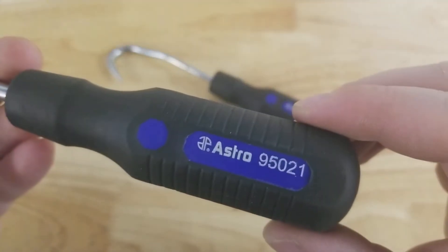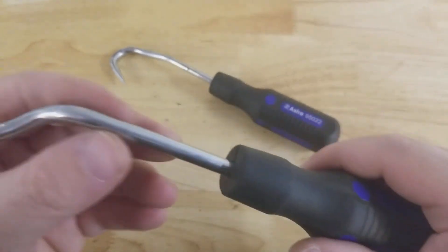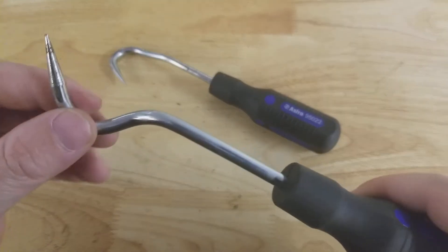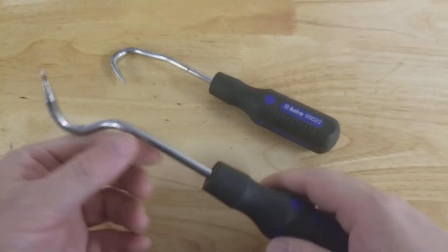And here's more of a 90-degree angle, model 95021. They've got nice grips on them and a nice thick shaft. Some cheap ones are real skinny or brittle here, and you go to do something and it just comes right off. No good.